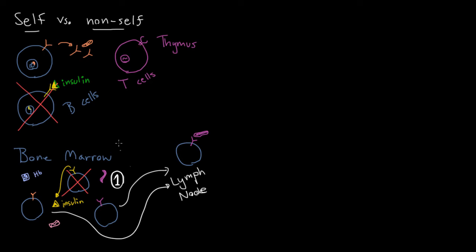But this is not a foolproof method, or else we wouldn't need a second step. Every once in a while a B cell will escape the bone marrow even though it reacts to self — every process has its mistakes, and maybe not every protein is present in the bone marrow in sufficient abundance to catch every self-reactive B cell. So let's say this is a B cell that escaped the bone marrow even though it reacts to self. It's going to find the protein it was made at random to react with — the protein your body makes and needs — and it's going to bind to it.